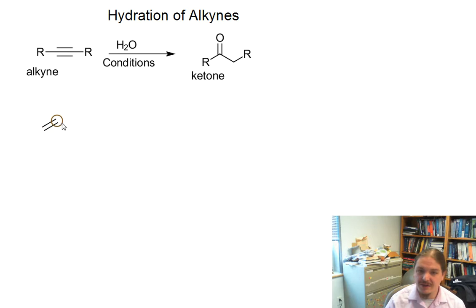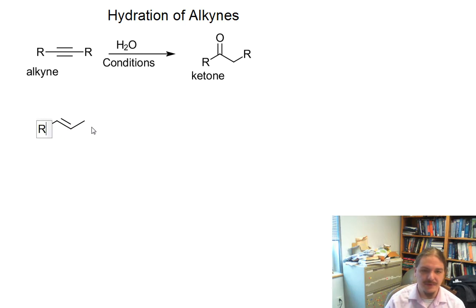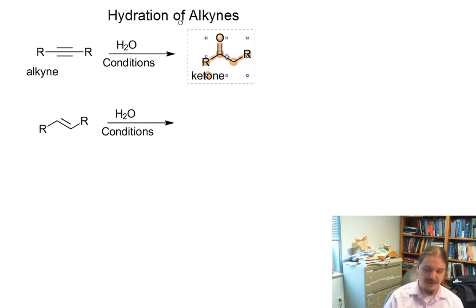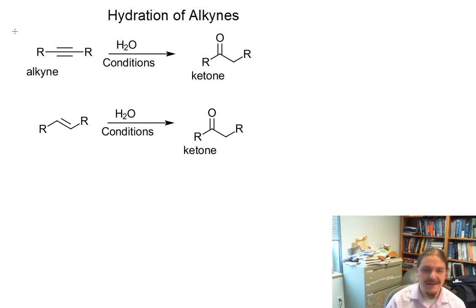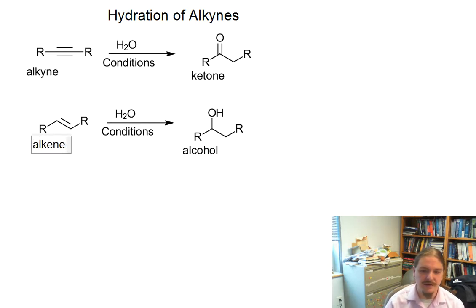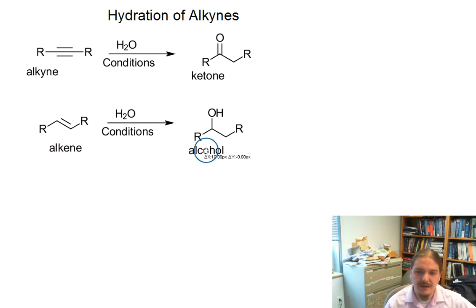Just as a quick comparison, let's look at the alkene example. Here's our alkene. Let's copy down our water in various conditions — the alkene does not make a ketone, it makes an alcohol. So we make an alcohol from an alkene: alkene gives alcohol.